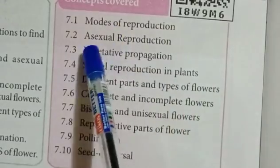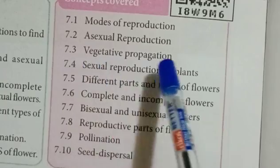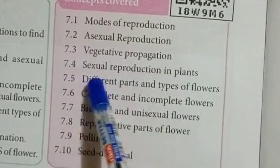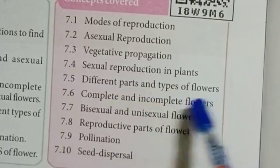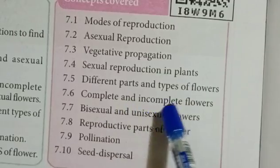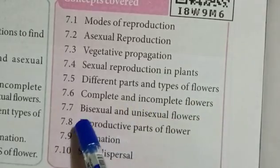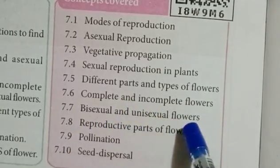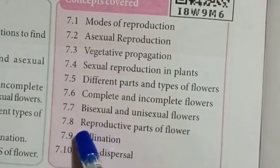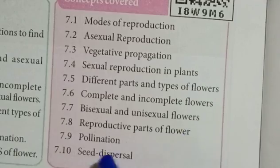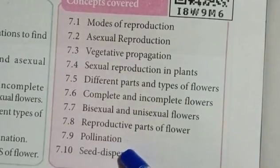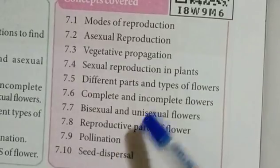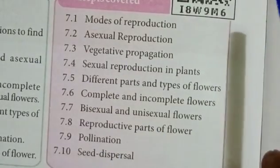The concepts in this lesson are: modes of reproduction, asexual reproduction, vegetative propagation, sexual reproduction in plants, different parts and types of flowers, complete and incomplete flowers, bisexual and unisexual flowers, reproductive parts of flowers, pollination, and seed dispersal. These ten topics are the concepts in this lesson, so let us start.